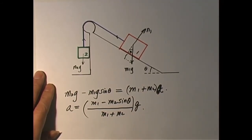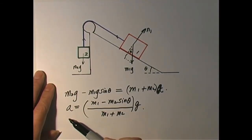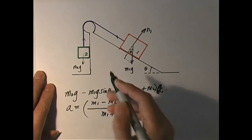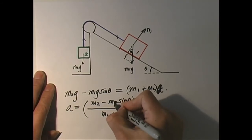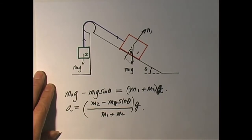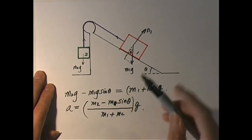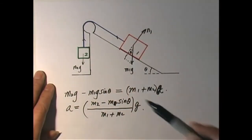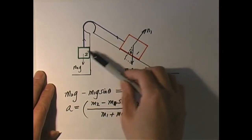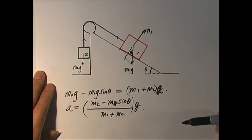Did we make the right guess? That depends on whether A is positive or negative. A is positive when M2 is greater than M1 sine theta — then the whole thing slides that way. The minimum value of M2 to make it happen is M1 sine theta. If M1 sine theta is greater than M2, A will be negative and the actual acceleration is down the slope. And if M2 equals M1 sine theta exactly, there is no acceleration for the system.